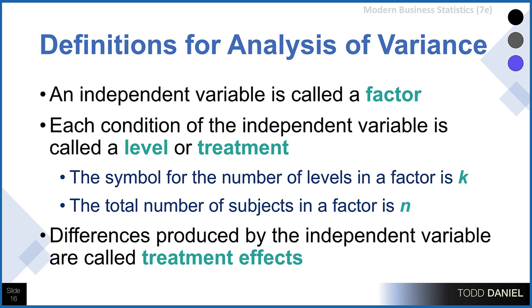Let's review some definitions for the analysis of variance. The independent variable we will call a factor. If that factor is type of car and there are three types, then there are three levels within that factor. A level can also be called a treatment. If we are comparing four different diets, the factor is type of diet, the levels are diet one, two, three, and four, or the treatments are one, two, three, and four. The symbol for the number of levels in a factor is K, and the sample size is N.